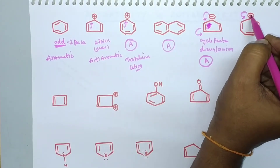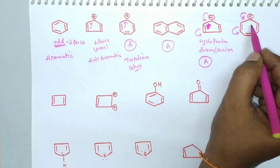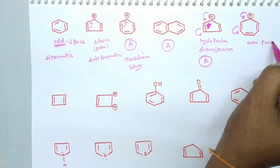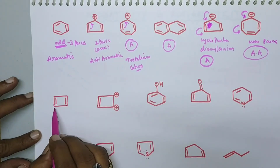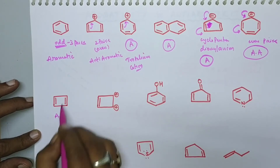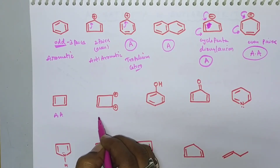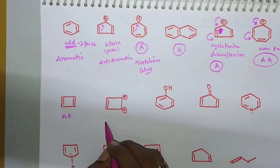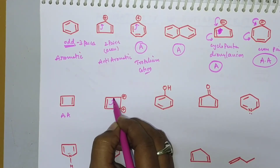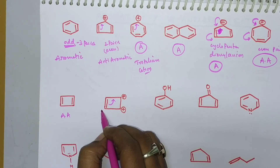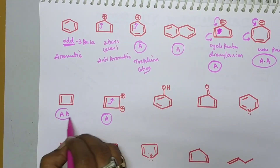Another example involves delocalization through bond shifting, resulting in four pairs of electrons — an even number — making it anti-aromatic. Similarly, cyclobutadiene with two π bonds is also anti-aromatic. A molecule with only one π bond and a positive charge has one pair — an odd number — so it is aromatic.